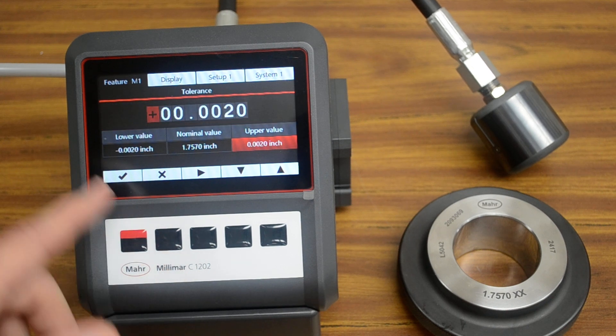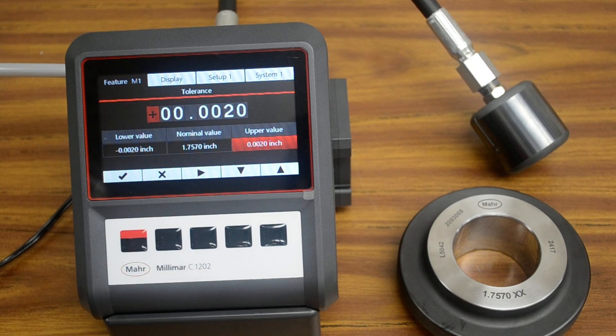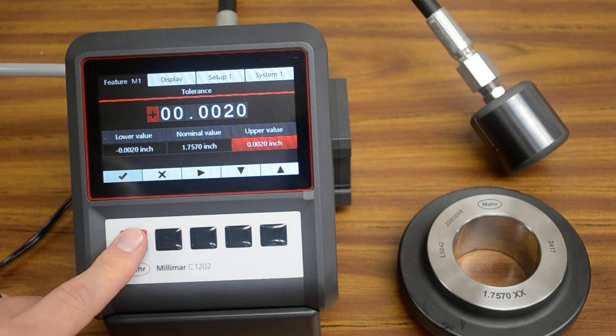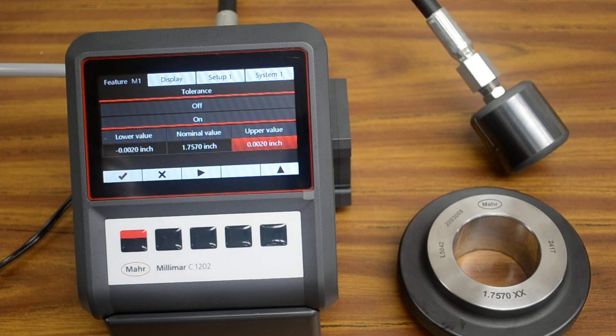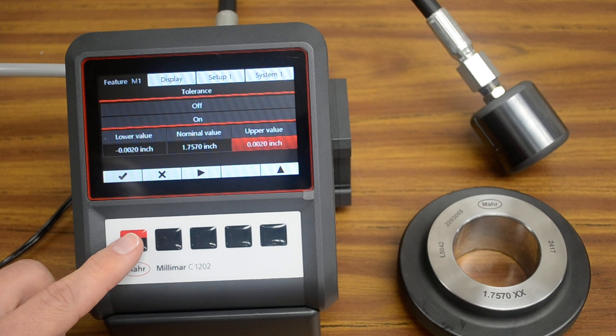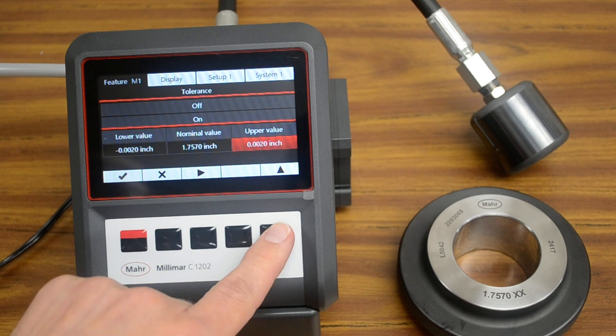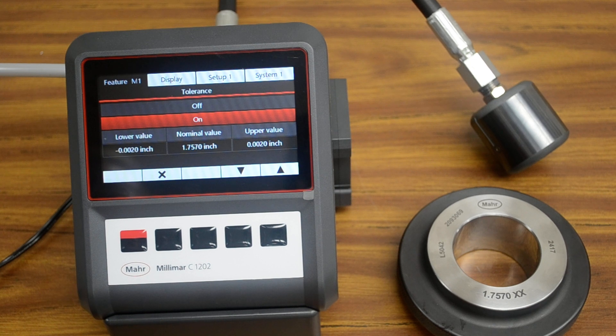You press the check again, it works exactly the same. Obviously, on the upper value, it will be a positive measurement. You can change the digits to whatever your tolerance is, and press the check mark when you're finished.